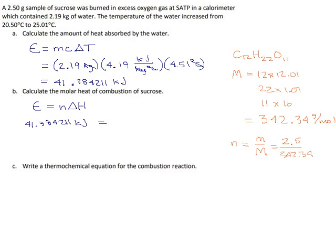So the number of moles here would be 2.5 grams divided by 342.34. This is not going to be much. I get 0.007302682 moles of sucrose. That number is our N over here. It's how much sucrose burned.